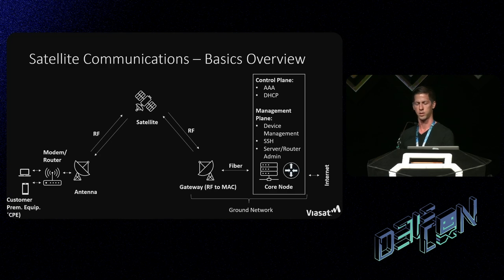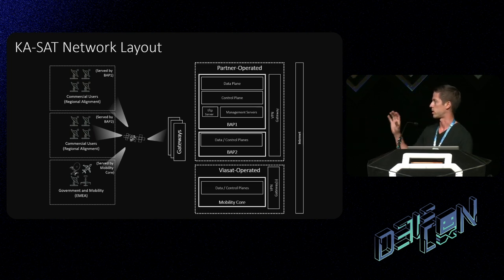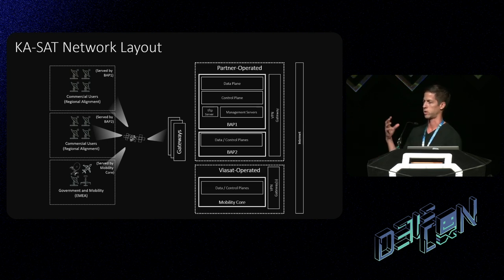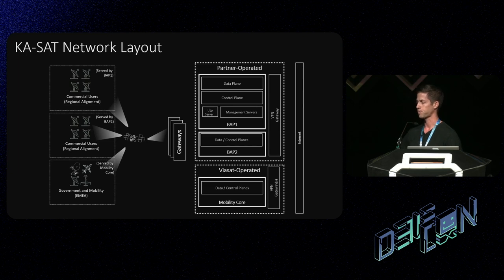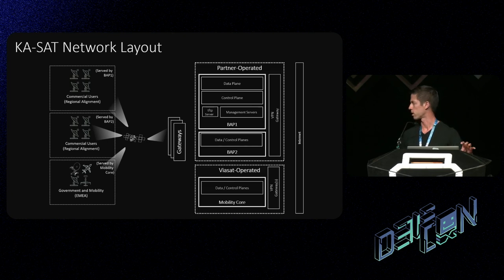I'll pivot toward the KASAT-more-specific network layout. On the left-hand side of the diagram are the users with modems or terminals. In the KASAT example, users were served by different partitions — bandwidth aggregation points. BAP one served a regional set of commercial users; BAP two was also a different set of commercial users. The last one was a Viasat-operated mobility core that included different systems. There was a partner operating BAP one and BAP two, and then we were responsible for a different core node network for the Viasat-operated mobility and government cases.